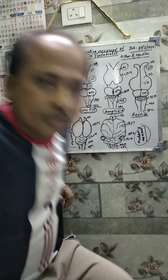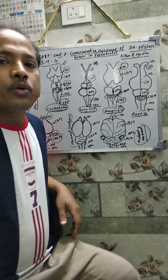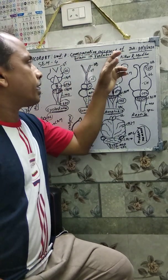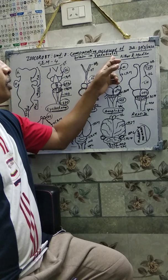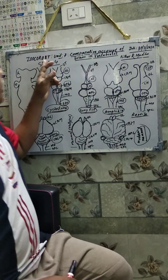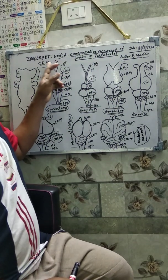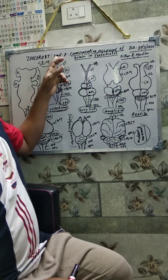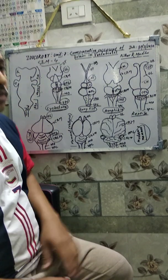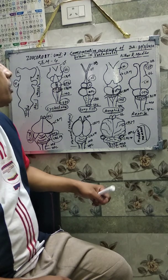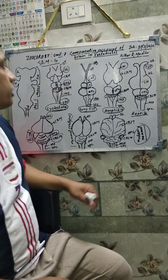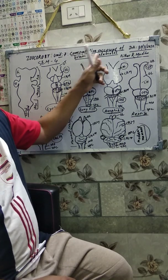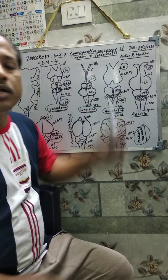My dear students, today I will discuss the comparative account of the brain in vertebrates. This is under Semester 4, brain paper, Unit 7. The topic is the comparative account of the brain in vertebrates.